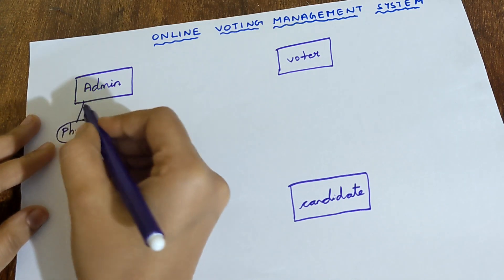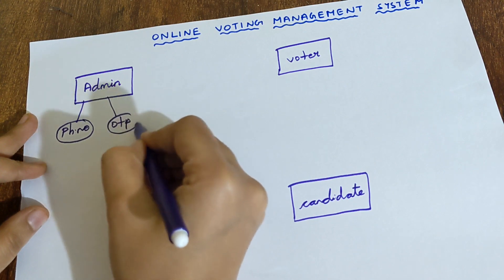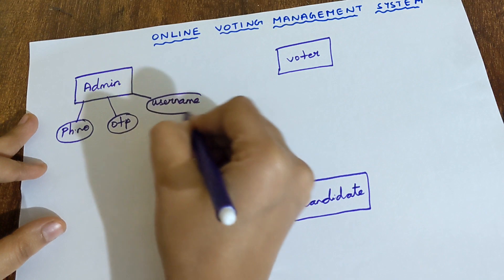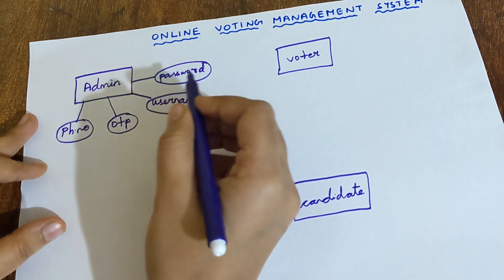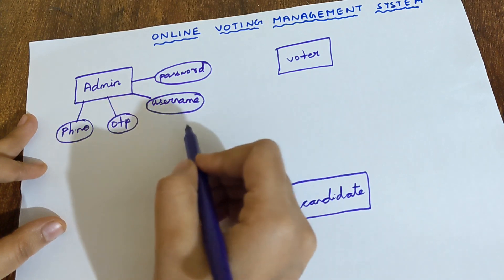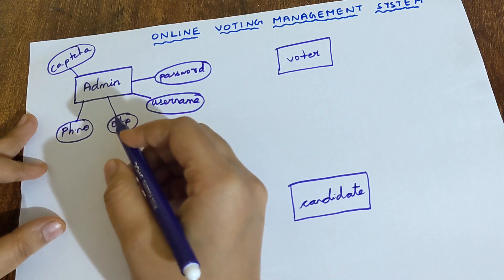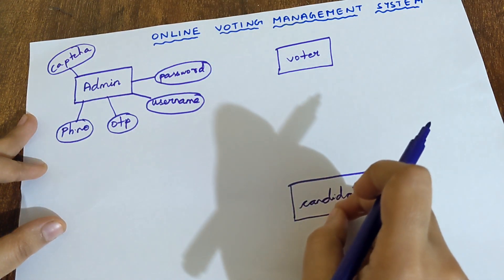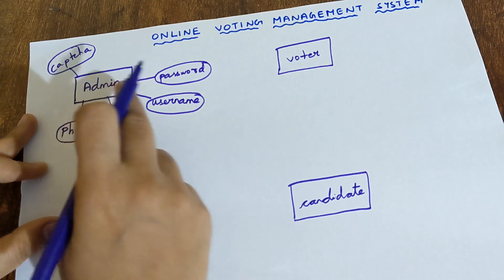In order to use any app, first you have to give the phone number and then you will get an OTP. You have to enter that OTP. After entering the OTP, you will be asked to create a username and a password. Whenever you want to enter into the app, you have to give the username, password, and then a captcha will be shown to you. After entering the captcha, you will be able to access the app. So the admin will be able to access and check whether the information of Voter and Candidate are true or not.